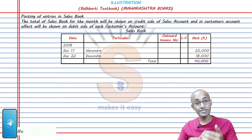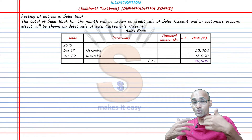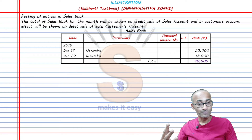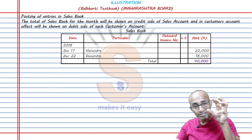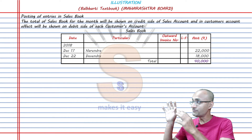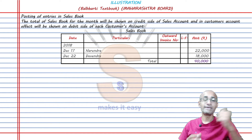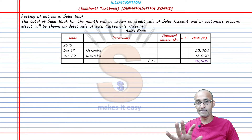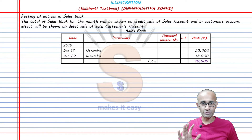There can be 10, 20, 50, or even 500 customers, so the sales book is a long list. But we only need to remember the total — in this case, 40,000. How do we write this information in the sales account? First of all, I will show you a journal entry, even though it is rough work.